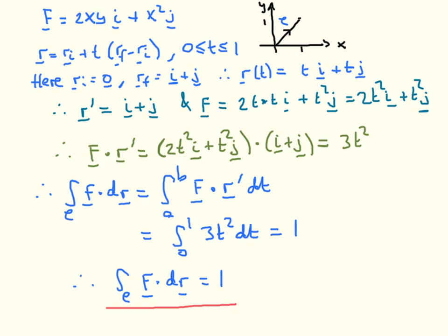In the first question, the vector field is given here, and the path is a straight line that goes from the origin to the point with coordinates 1, 1. We can parameterise a straight line as follows: any point on the path has position vector r given by the initial position vector — the origin — plus t, a parameter from 0 to 1, growing in the direction of the final position minus the initial position.